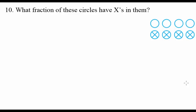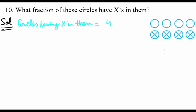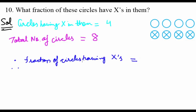Question ten: what fraction of these circles have X in them? We are given 8 circles and have to find the fraction. Circles having X in them: there are 4 circles with X. Total number of circles is 8. Therefore fraction of circles having X is 4 over 8.